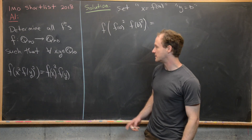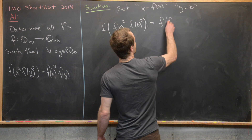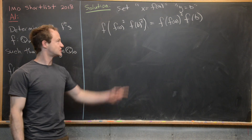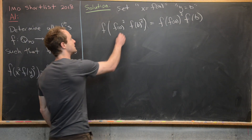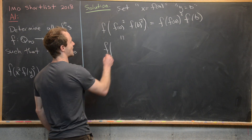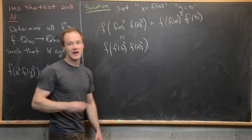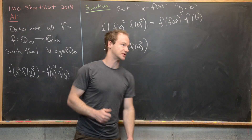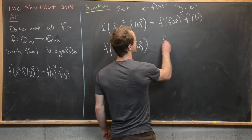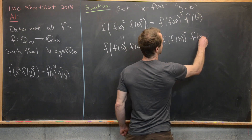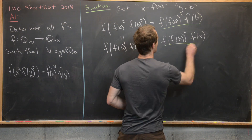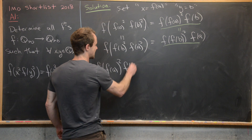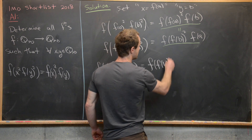On the right-hand side we now have f of (f(a))² times f(b). But since the left-hand side is homogenized we can swap the order of (f(a))² and (f(b))², giving us f of (f(b))² times (f(a))², which by our defining equation equals f of (f(b))² times f(a). The real power of homogenizing is that we can expand in two different ways. Comparing the two expressions underlined in green, we get: f((f(a))²) · f(b) = f((f(b))²) · f(a), for all positive rationals a and b.